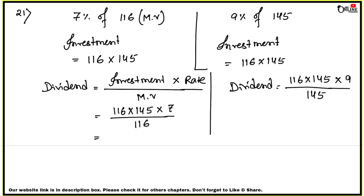After calculation, the first case dividend comes to 1,015 and the second case dividend comes to 1,044. Comparing both values — the second case dividend of 1,044 is higher. So the second case is more profitable. The answer is 9% of Rs.145 is more profitable.